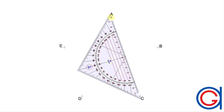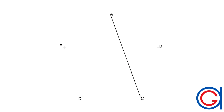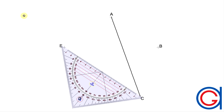So firstly, we will join vertex A to vertex C, skipping vertex B, as can be seen here. Now we will join vertex C to vertex E, skipping vertex D.